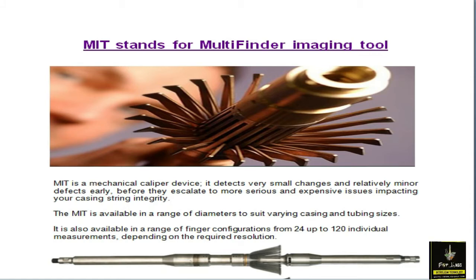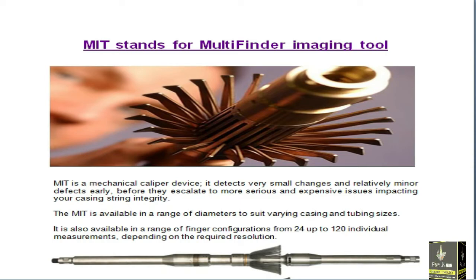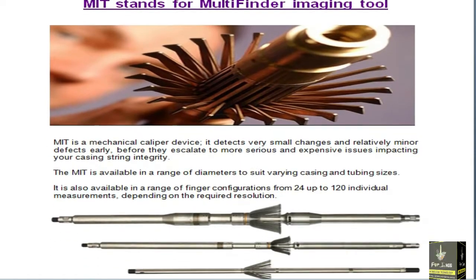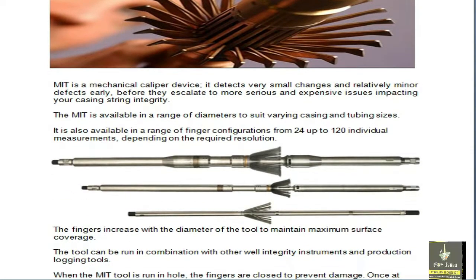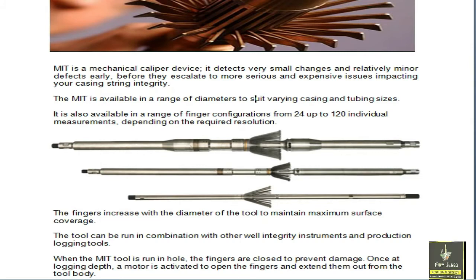MIT tools come in various sizes according to the casing and tubing. For different sizes we can use different tools. It has fingers or arms ranging from 24 to 120 arms depending on the required data. These arms I will explain later when I show you practically how they work and operate. Different diameters have different arms available, and the number of fingers increases with larger diameters. This tool can also be run with different logging tools. When MIT is run in hole, the fingers are closed, and once we reach the target depth a motor is activated to open them.